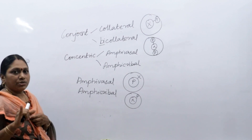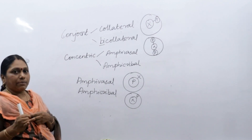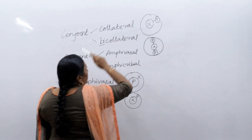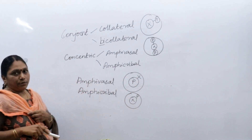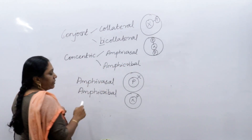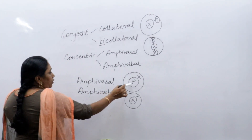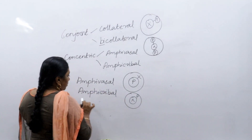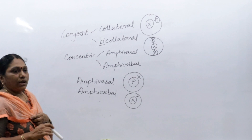To summarize the vascular tissues: radial — xylem and phloem at different radii. Conjoint — xylem and phloem at same radius, with two subtypes: collateral (xylem center, phloem periphery) and bi-collateral (xylem center, phloem on both sides). Concentric — one surrounding the other, with two subtypes: amphi-vassal (phloem surrounded by xylem) and amphi-cribal (xylem surrounded by phloem). These are the different types of vascular tissues found in a plant body.